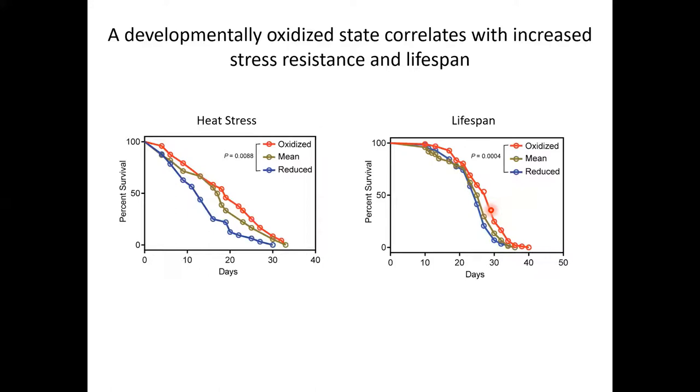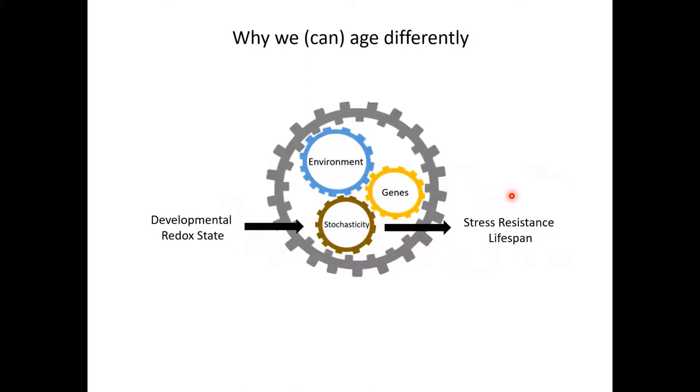We further showed that the redox state not only correlates with stress resistance and lifespan, but it can also modulate those. By changing the redox environment during development to a more or less oxidizing state, then we can increase or decrease the lifespan of the individuals respectively. What was equally exciting was that this variability in redox states appears at this point to occur randomly or stochastically. It is established early in life and can be measured and thus it could be used as a biological marker for the aging process.